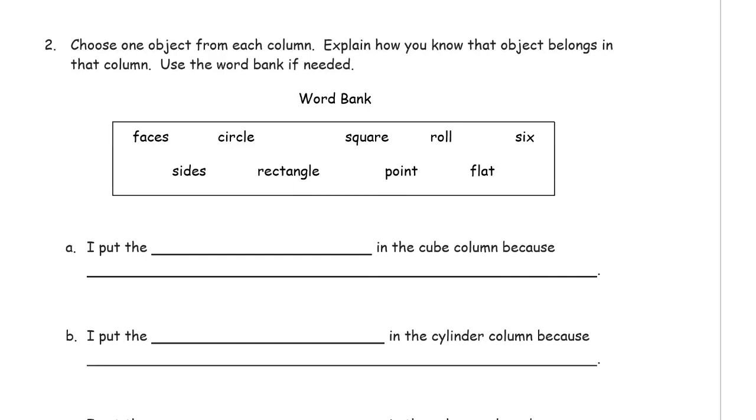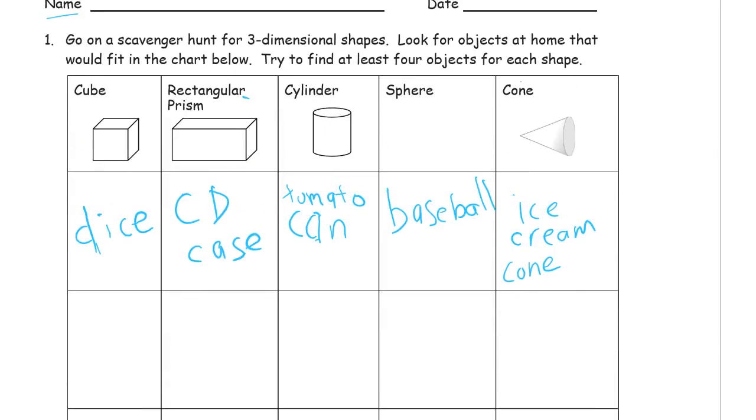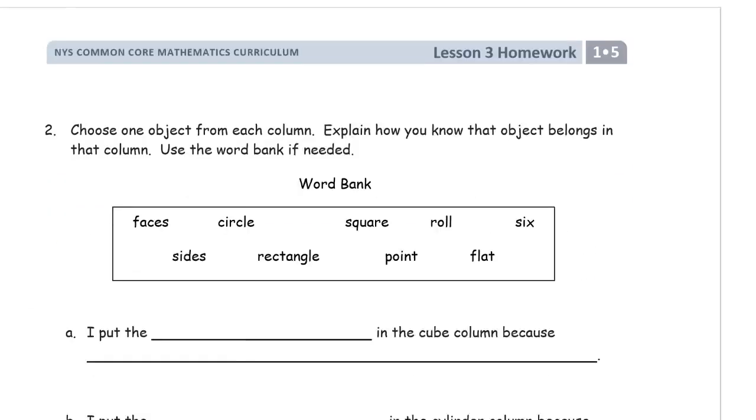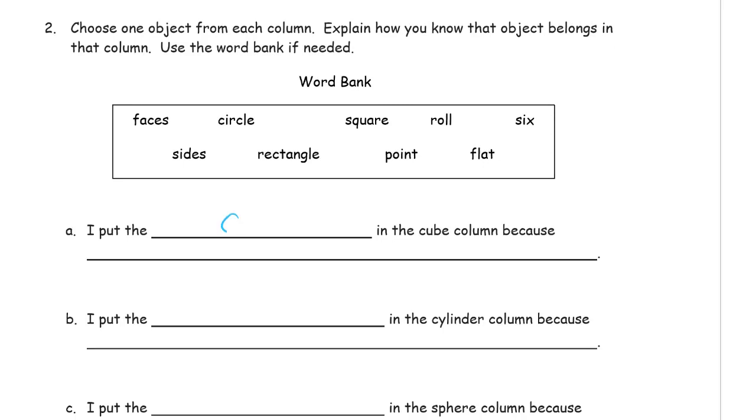Choose one object from each column and explain how you know that object belongs in that column. So, let's say, here we go. We'll start with the dice. I'll just work from left to right. So, I put the dice in the cube column because and here's a word bank so I can know how to spell the words that I need.